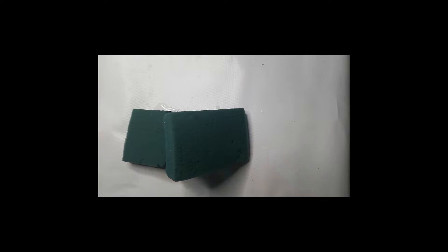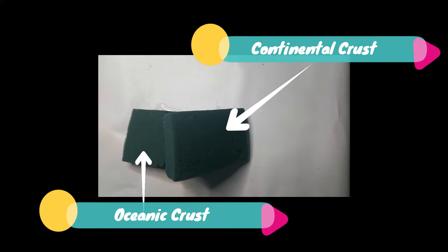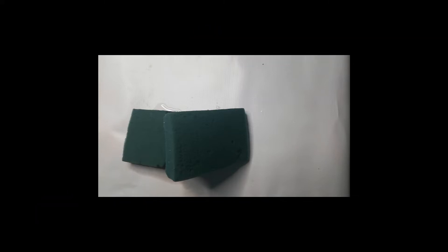The foam represents an oceanic crust and a continental crust — they are converging. The continental crust curves upward on top of the oceanic crust due to its lesser density. The oceanic crust, due to its greater density, stays below.